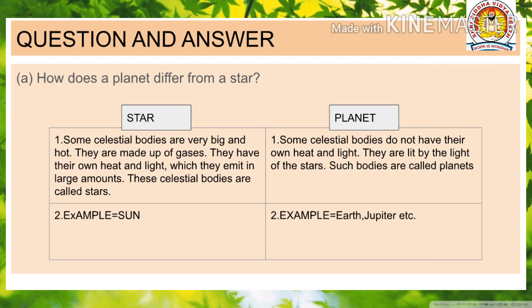How does a planet differ from a star? Star: Some celestial bodies are very big and hot. They are made up of gases. They have their own heat and light, which they emit in large amounts. These celestial bodies are called stars.